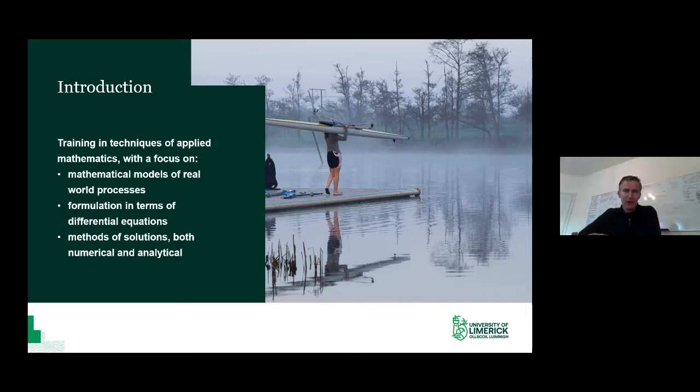Parts of Mathematical Modelling include both the development of models — taking a real world problem and turning it into mathematical equations — and then of course solving those equations too. The methods of solution break into analytical methods, things you can do with pencil and paper, and numerical methods where you need to do computer work. Both are very important parts of the Masters in Mathematical Modelling.